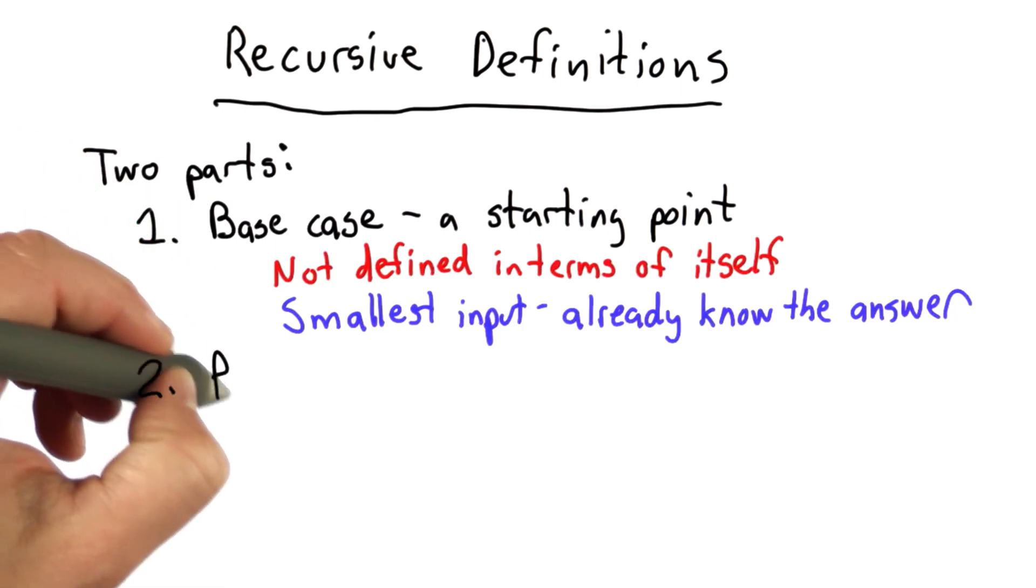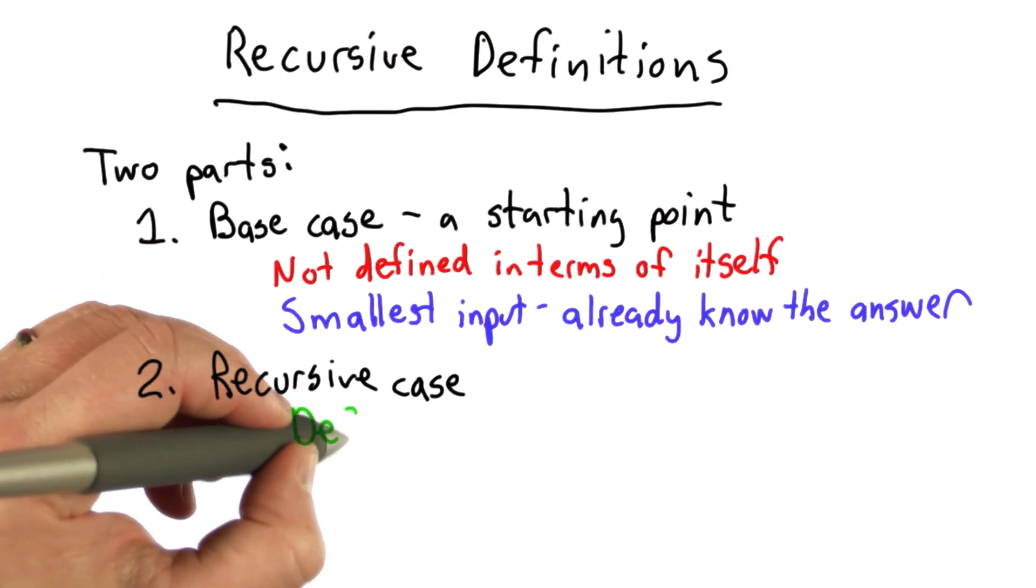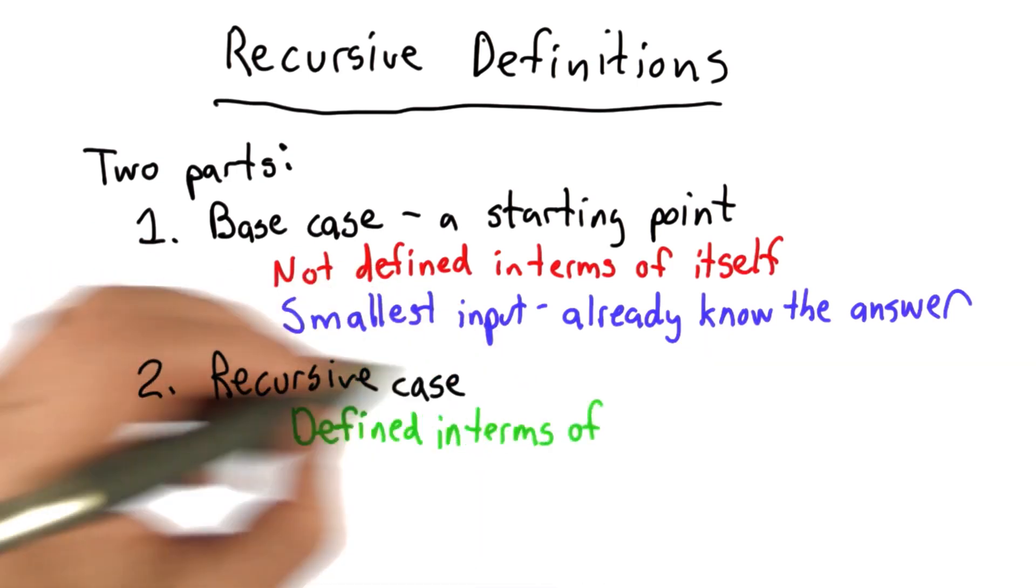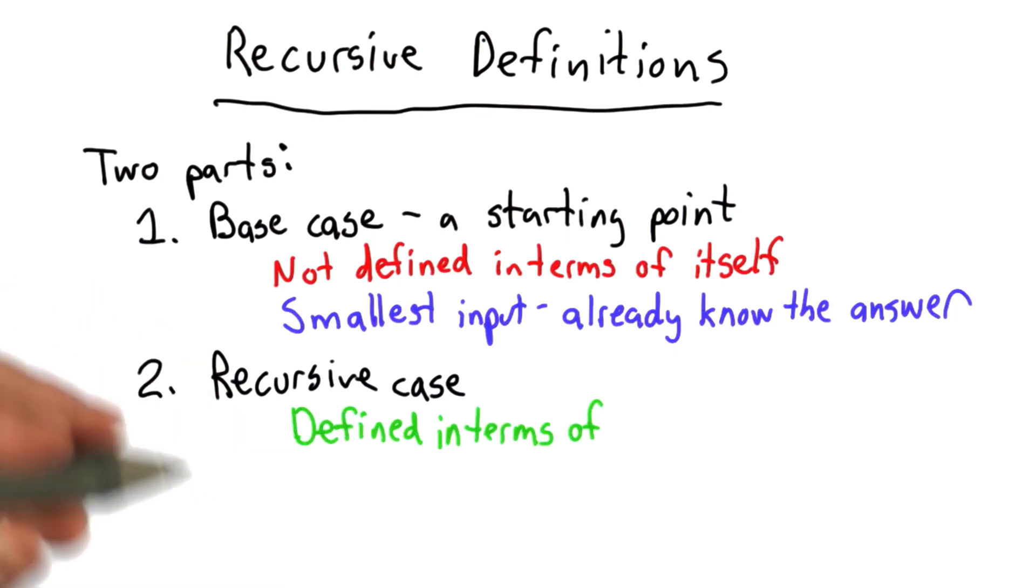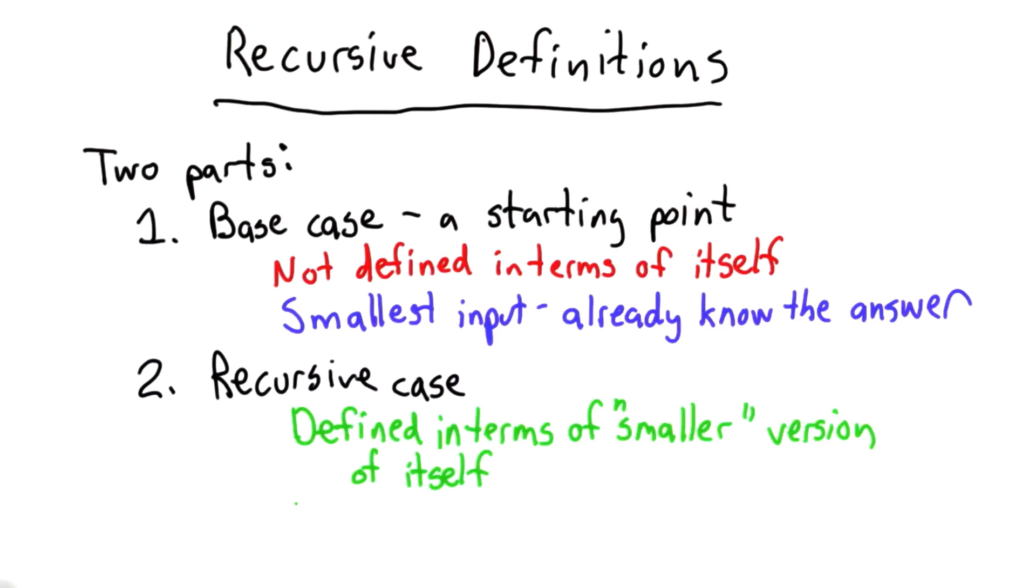The second part is the recursive case, and that is defined in terms of itself. But it shouldn't be defined in terms of itself exactly. It should be defined in terms of some sort of smaller version of itself. We need to make progress to eventually get to the base case. We'll see what that means in programs soon.